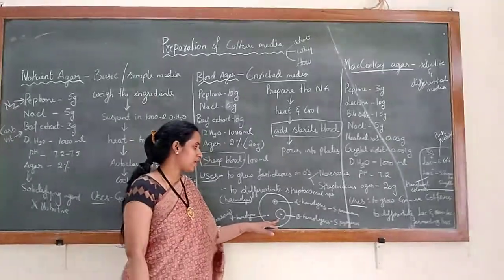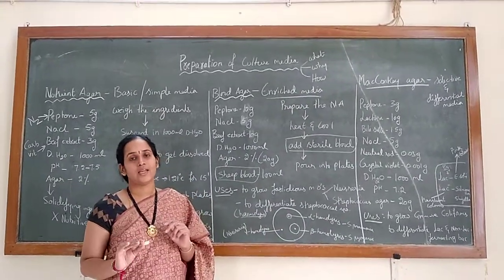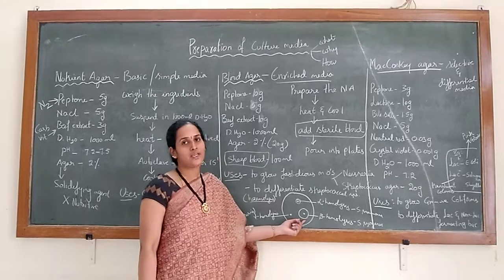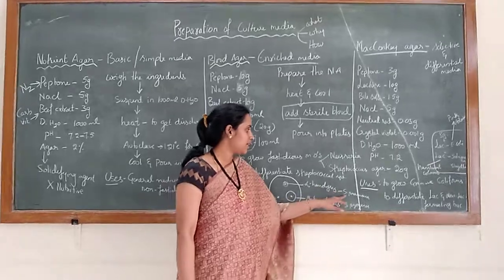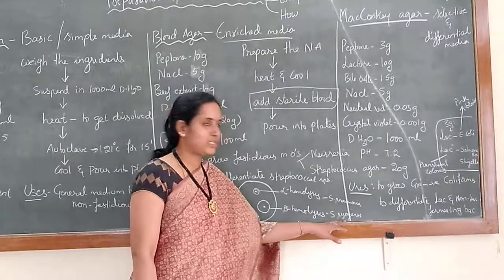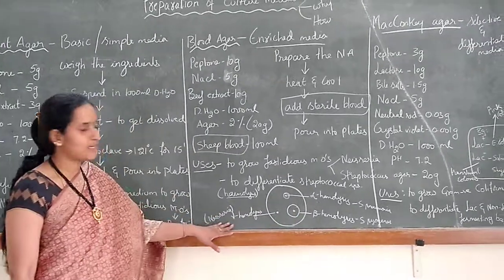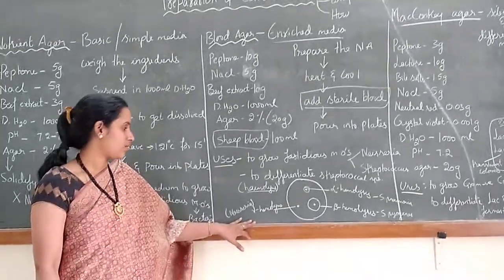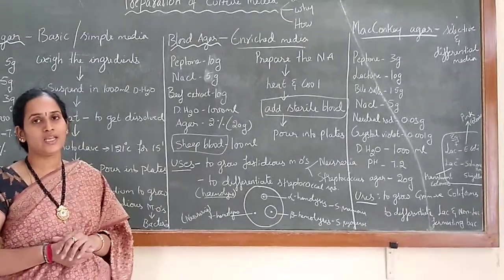Beta hemolysis involves complete lysis of RBC cells, so a clear zone is observed around the colonies. Examples: alpha hemolysis — Streptococcus pneumoniae; beta hemolysis — Streptococcus pyogenes. Gamma hemolysis shows no RBC lysis at all — no zone around the colony. Example: Neisseria, which shows no hemolysis.